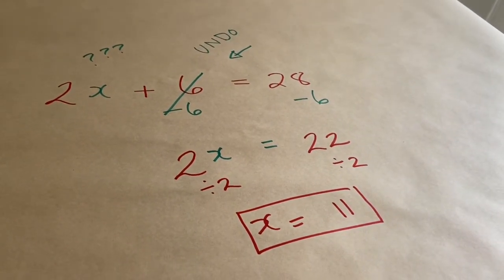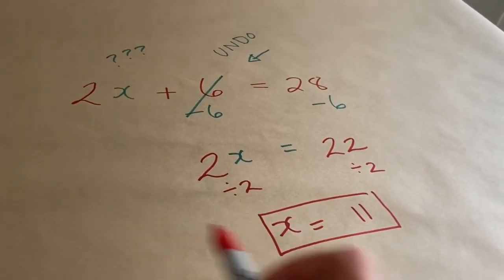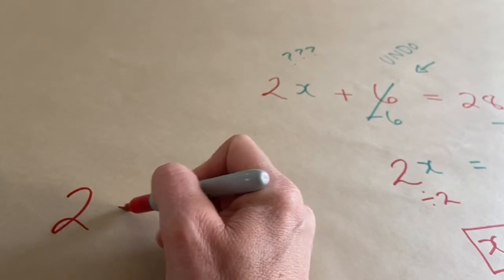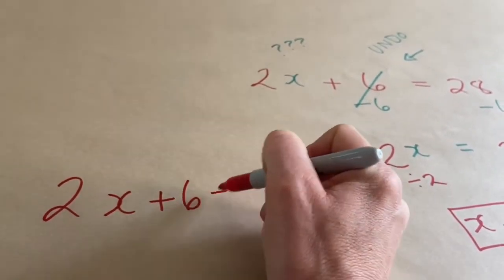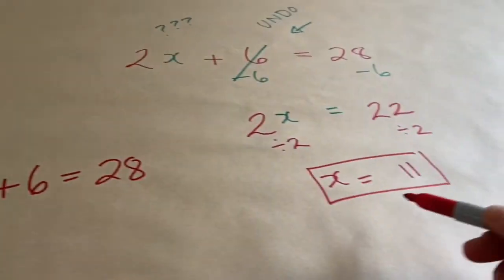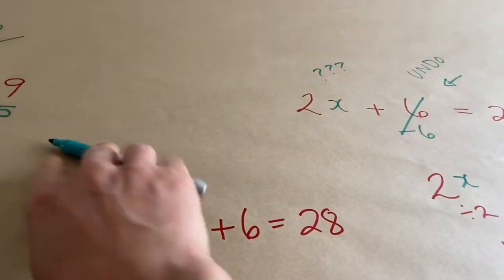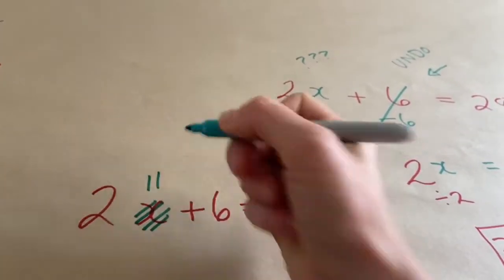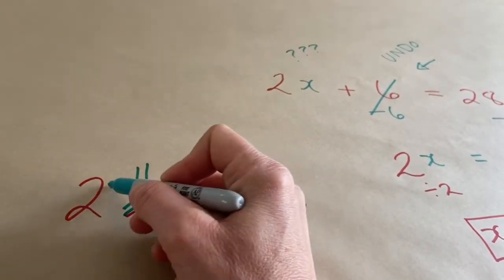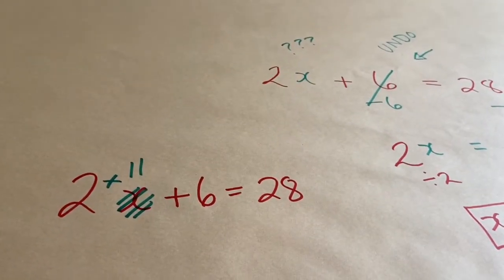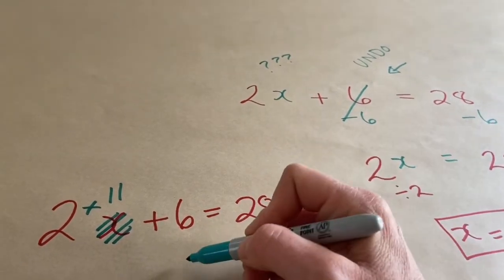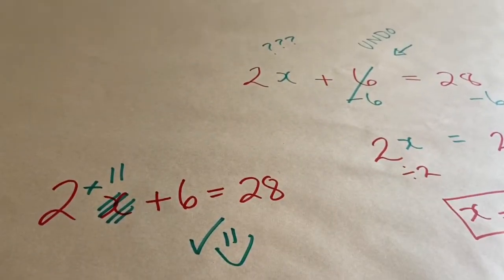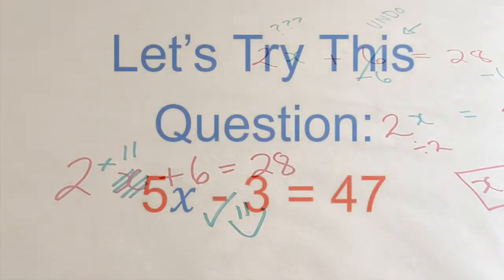Now, let's just check to make sure that works. If I wrote my equation, 2x plus 6 is equal to 28, I know that my x is equal to 11. I know that this number was 11. If I have 2 times 11, that gives me 22. 22 plus 6 gives me 28. So, this is correct. My algebra is correct.